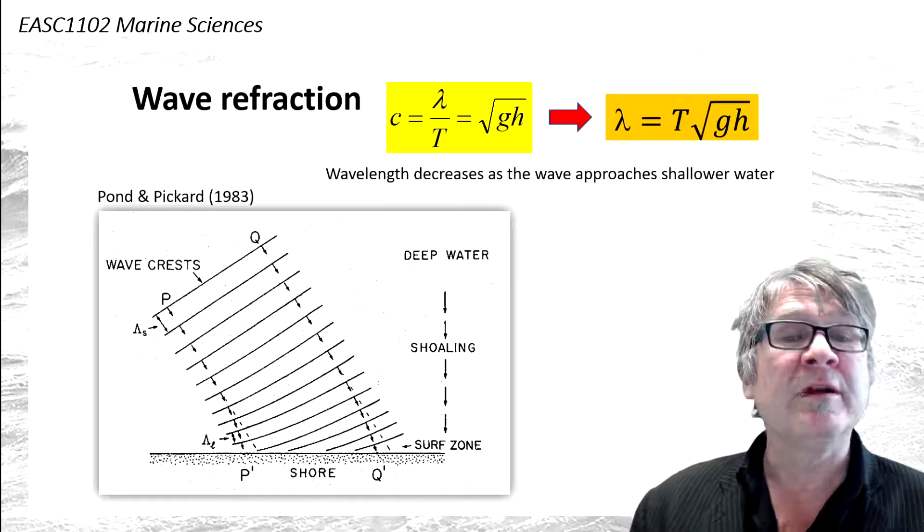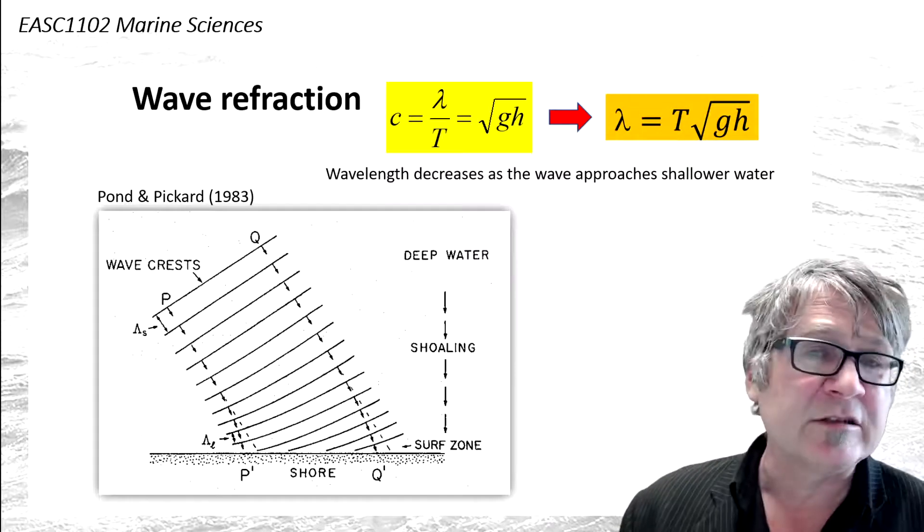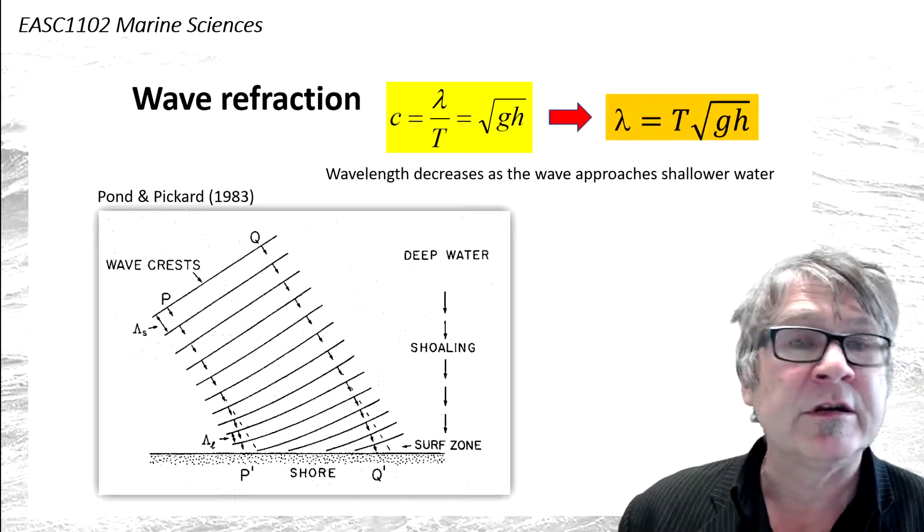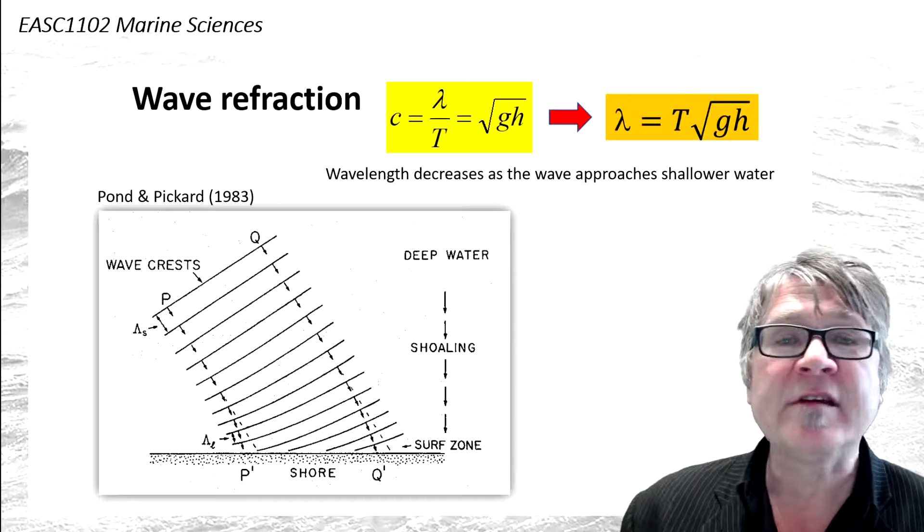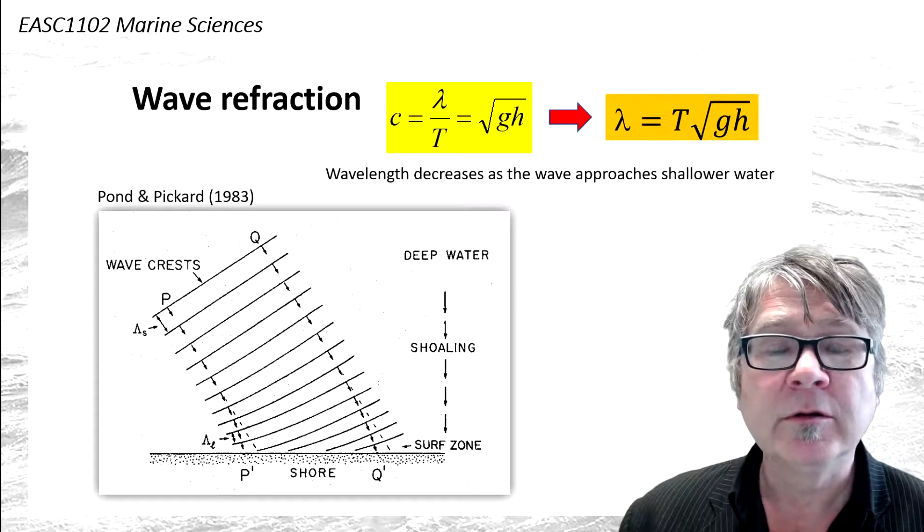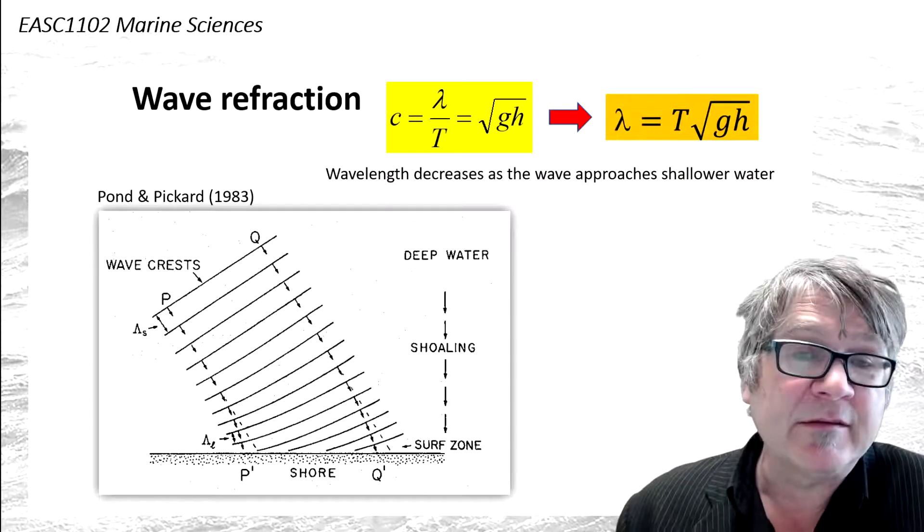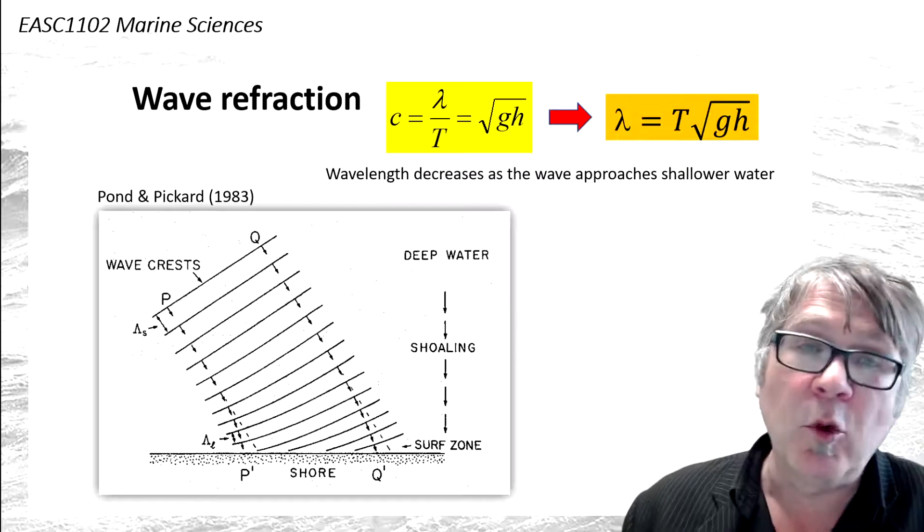There's a reason for this. All wind-generated waves turn into long waves as they approach shallower water, because the wavelength is given but the water depth decreases.